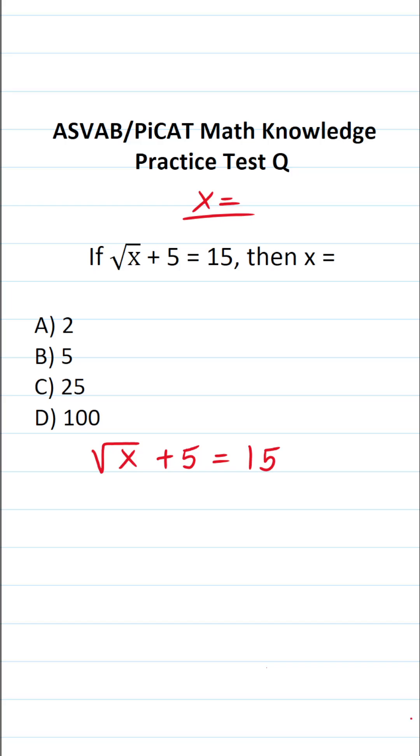Since we want to get x equal to something by itself, the first thing I'm going to do is subtract 5 from both sides of the equation. In doing so, this crosses out. This says the square root of x equals 15 minus 5, which is 10.